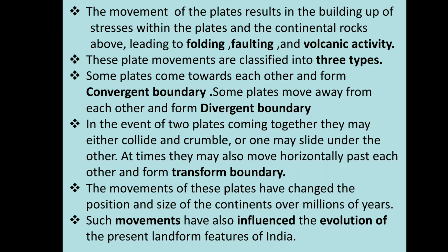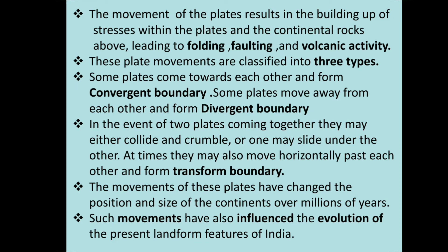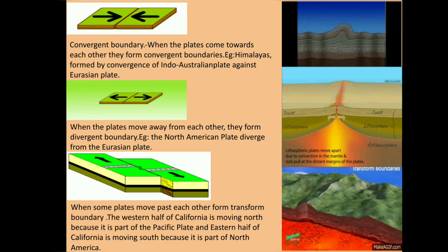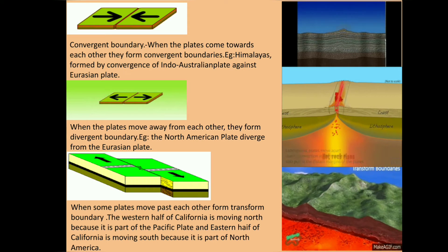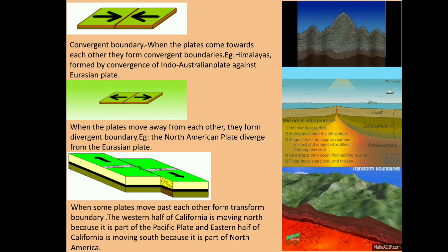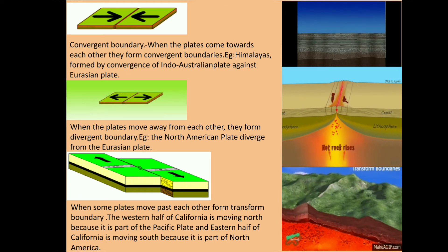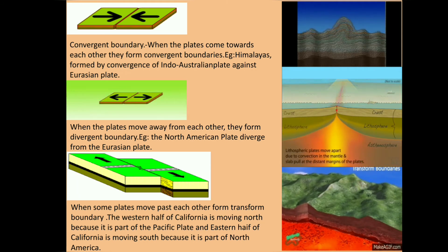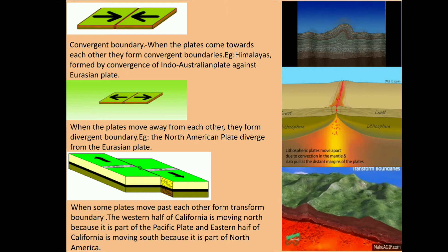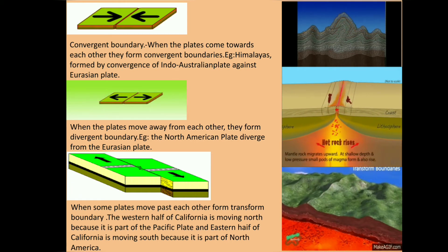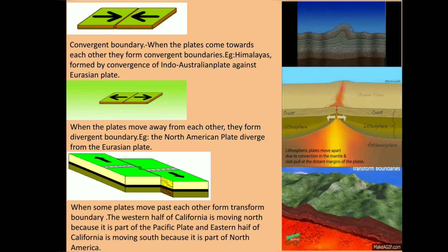Such movements have also influenced the evolution of the present landform features of India. Now study the direction of arrows for a clear understanding of the movement of plates. When the plates come towards each other, they form convergent boundaries — for example, the Himalayas, formed by convergence of the Indo-Australian plate against the Eurasian plate. When the plates move away from each other, they form divergent boundaries — for example, the North American plate diverging from the Eurasian plate. When some plates move past each other, they form a transform boundary — for example, the western half of California is moving north as part of the Pacific plate, while the eastern half is moving south as part of the North American plate.